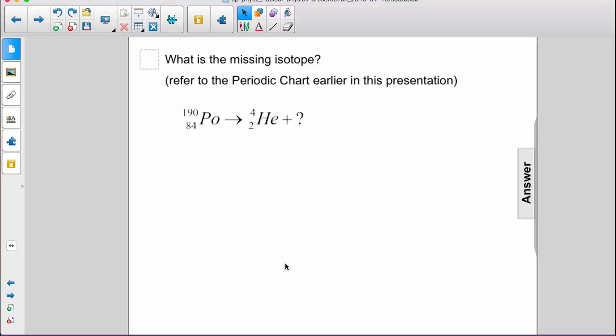What is the missing isotope? You're asked to refer to the periodic chart earlier in this presentation. Here we start with polonium-190. It decays into helium-4 plus something.